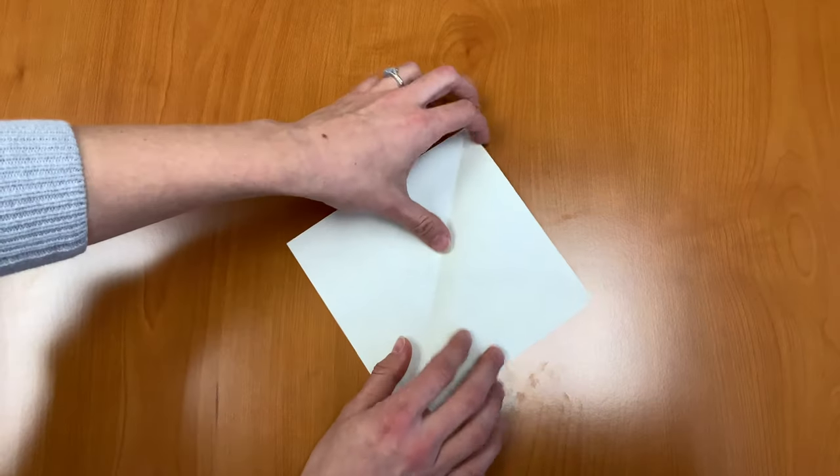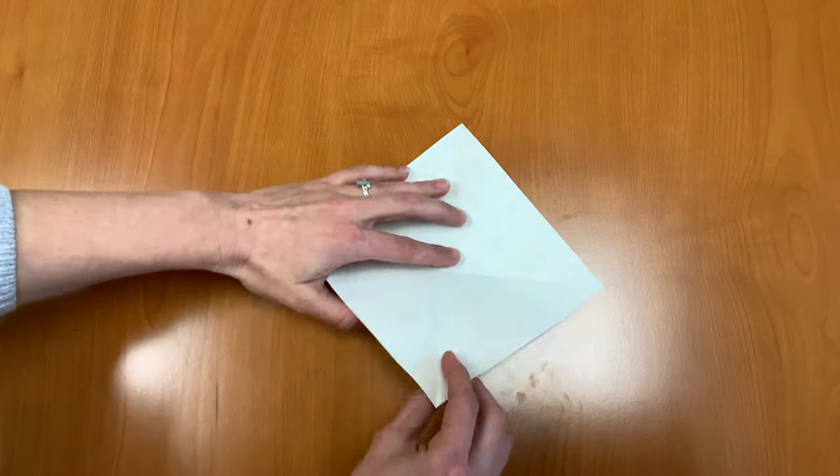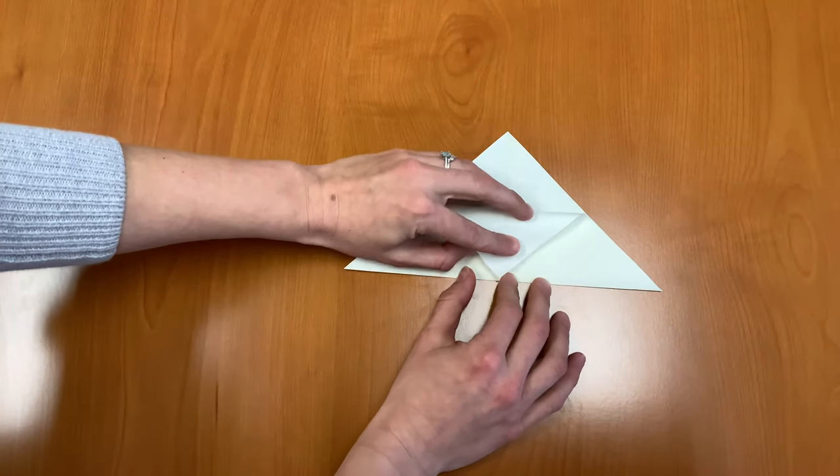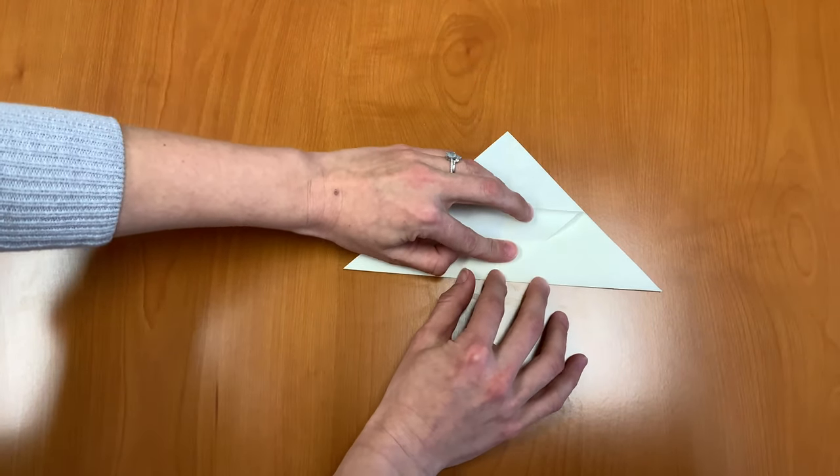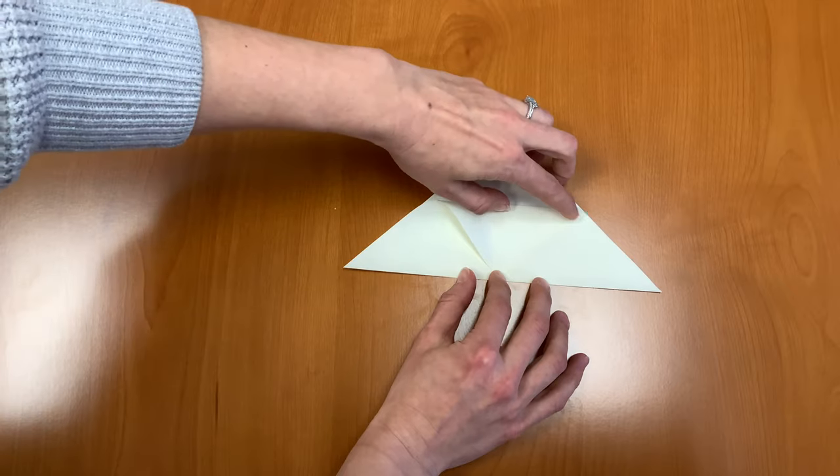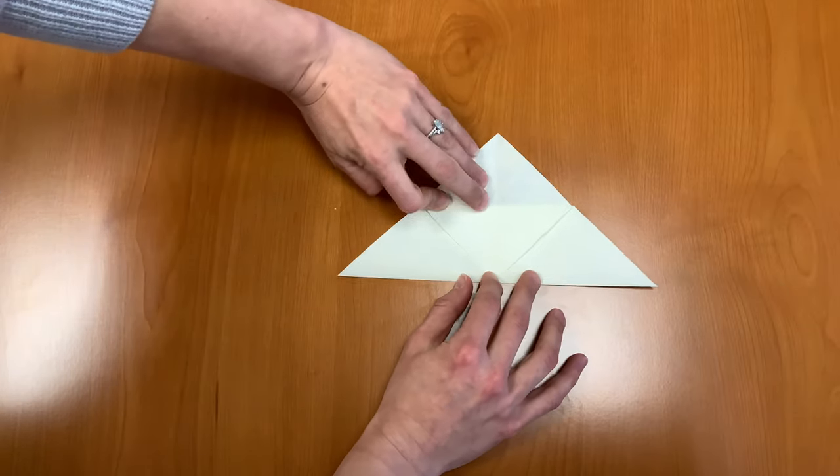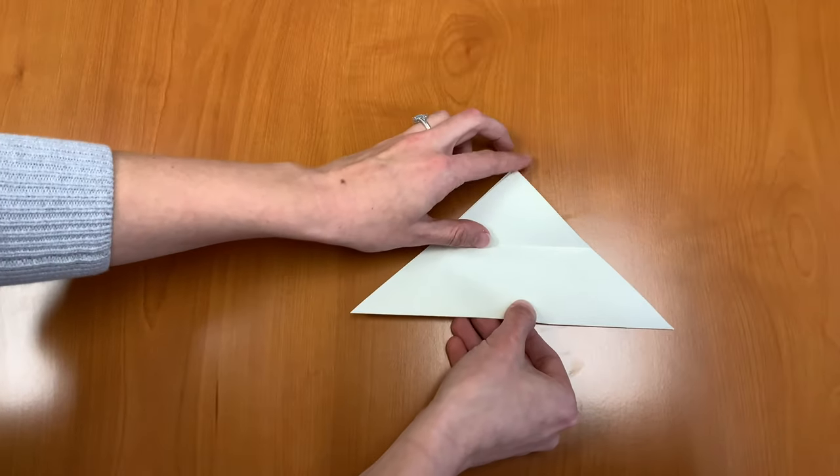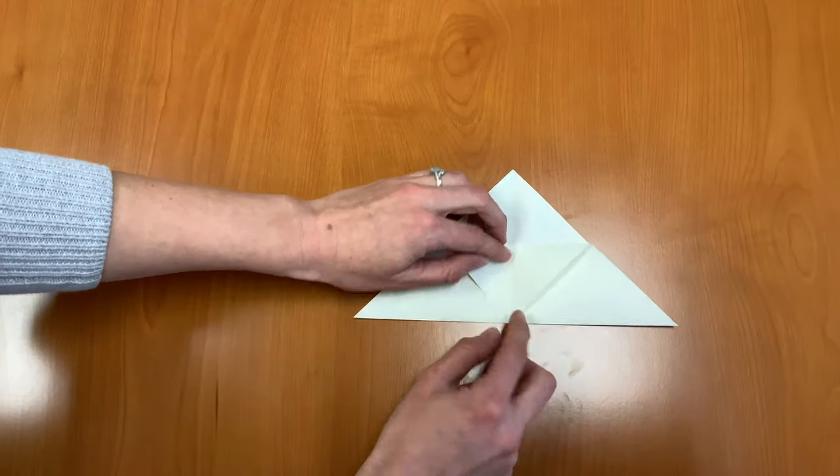Next, I'm going to take the top of the triangle that I have here and fold it down. So now we have a half triangle with just the front flap folded down.